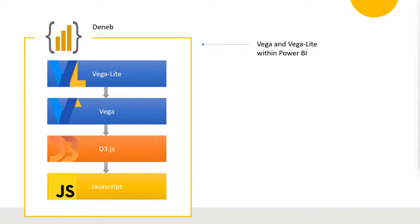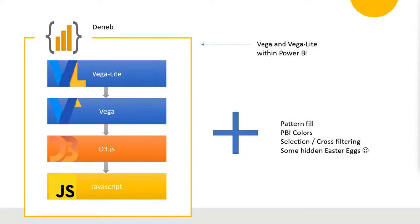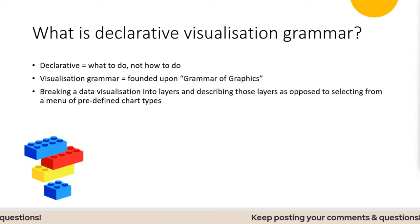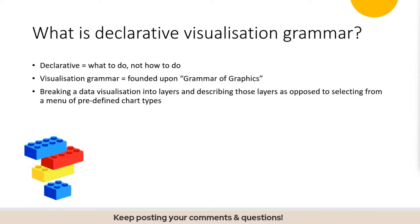Vega maintains an expressivity advantage over Vega-Lite since Vega-Lite is a subset of Vega. Deneb then wraps and encapsulates all of that, allowing us to create Vega and Vega-Lite JSON specifications in Power BI. Additionally, there are Deneb Extras that Daniel has contributed — things like pattern fill, the ability to use Power BI colors, cross-highlighting or cross-filtering, and some hidden Easter eggs in there too.